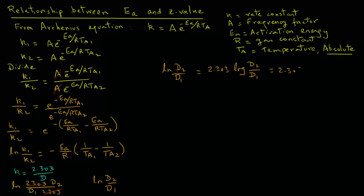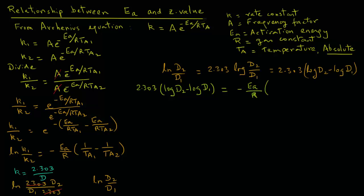That equals 2.303 times, in parenthesis, log D2 minus log D1. We can then write our complete equation: 2.303 times (log D2 minus log D1) equals minus Ea over R, in parenthesis, 1 over Ta1 minus 1 over Ta2. Rearranging, we get log D2 minus log D1 equals minus Ea over 2.303R, in parenthesis, 1 over Ta1 minus 1 over Ta2.